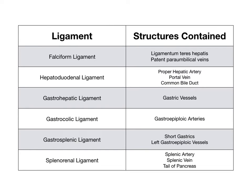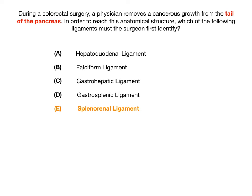The splenorenal ligament contains the tail of the pancreas — that was the key information in the clinical vignette. The physician wants to remove the cancerous growth from the tail of the pancreas, so first he has to identify the splenorenal ligament. They'll give it to you one way or the other: give you the structure and ask for the ligament, or give you the ligament and ask for the structure.